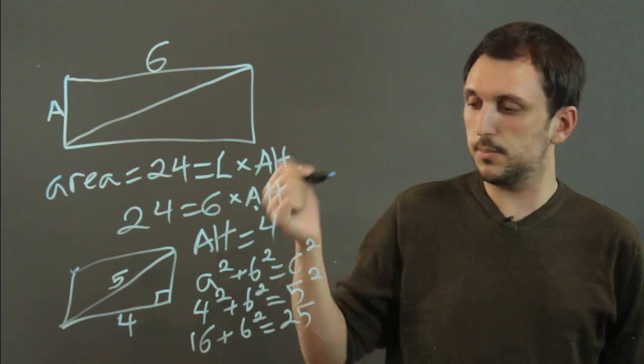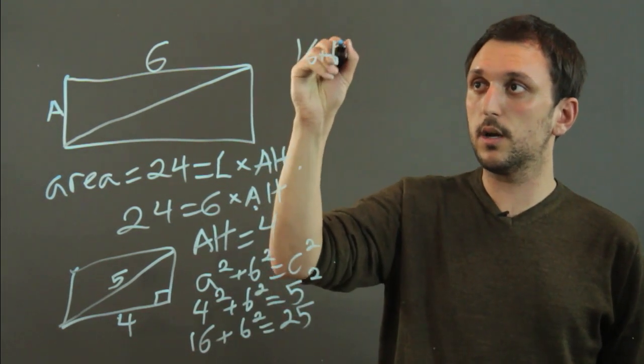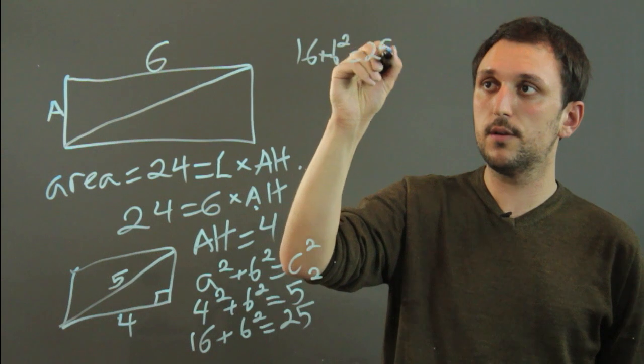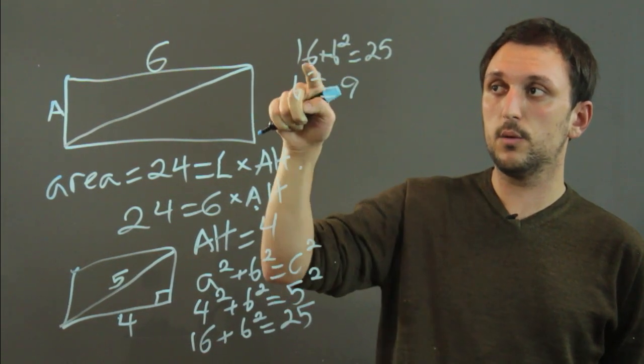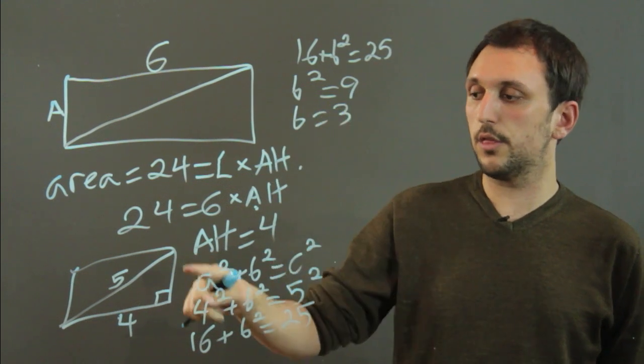And I'm going to bring the work up here. So 16 plus B squared equals 25, which means that B squared equals 9. We subtract. And that means that B equals 3.